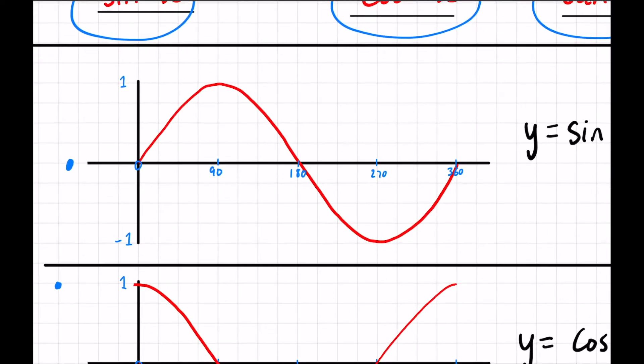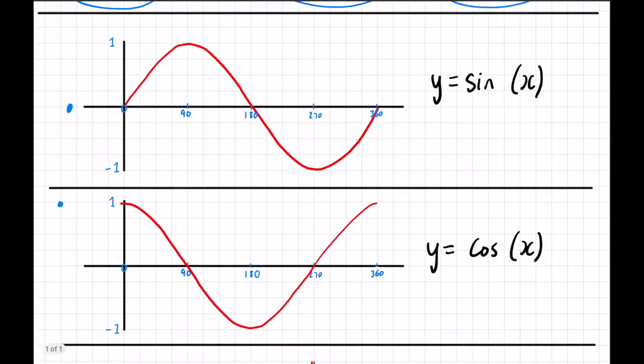Another thing within them is the values at for example 90, 180, 270 and 360. They are very easy to work out once you can see the graph here.